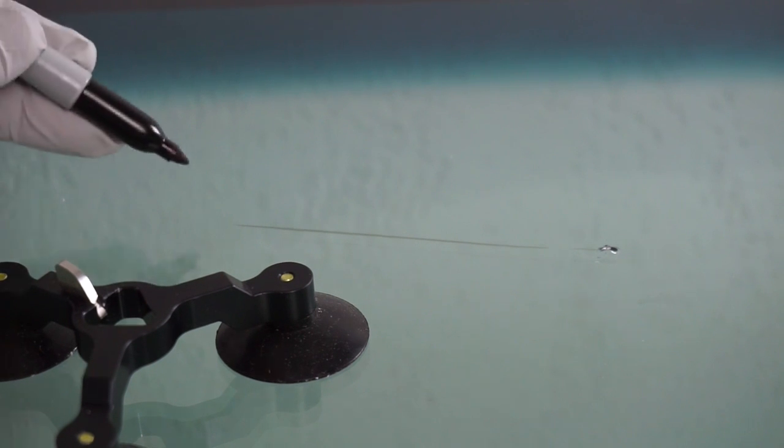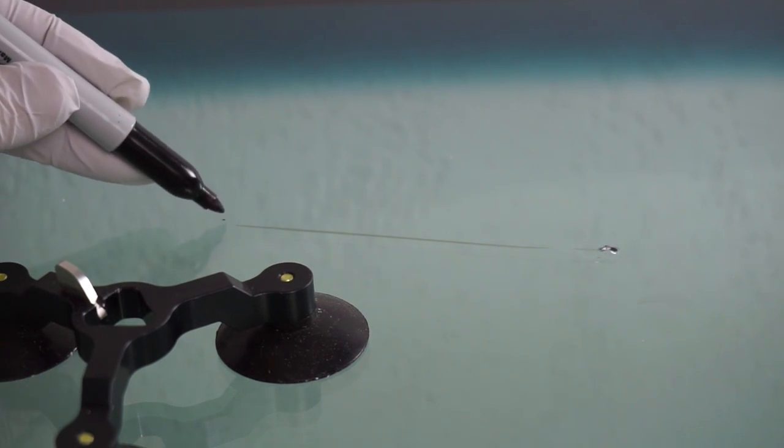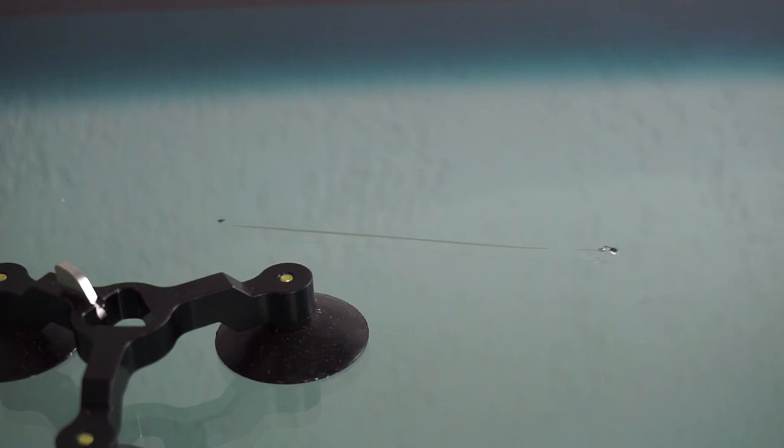Using a marker, place a dot about a quarter to eighth of an inch past the end of the long crack. This will serve as a guide as to where to begin drilling.